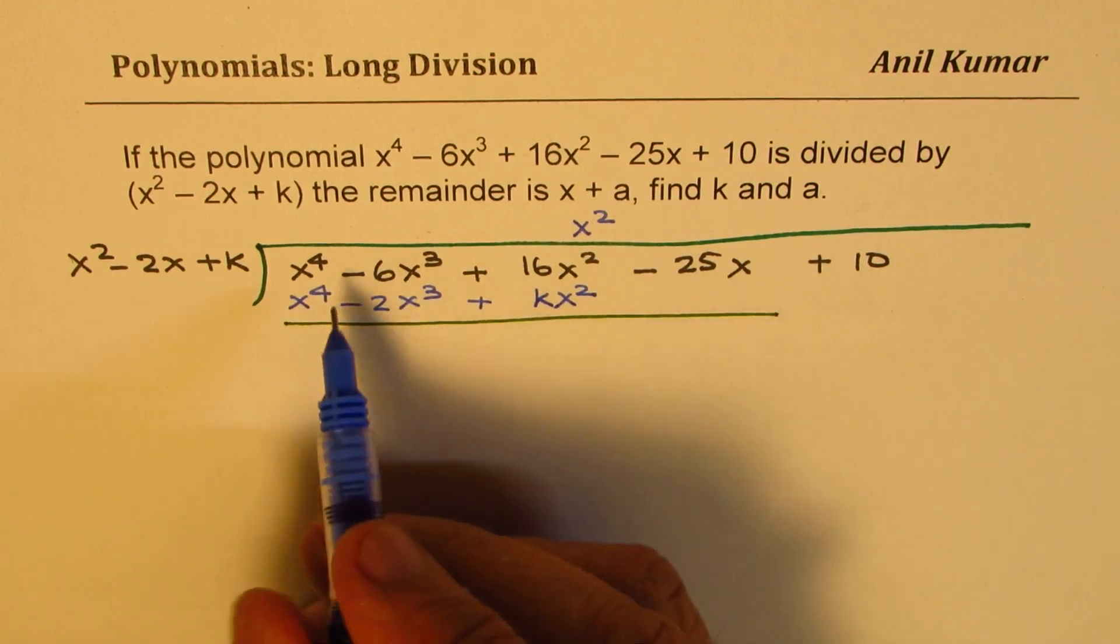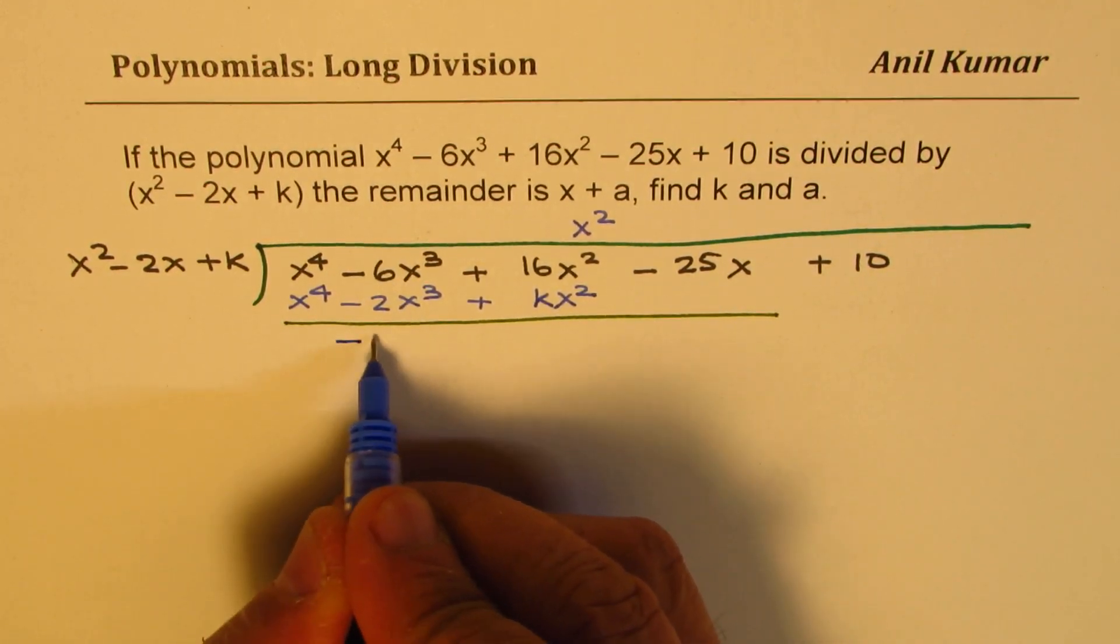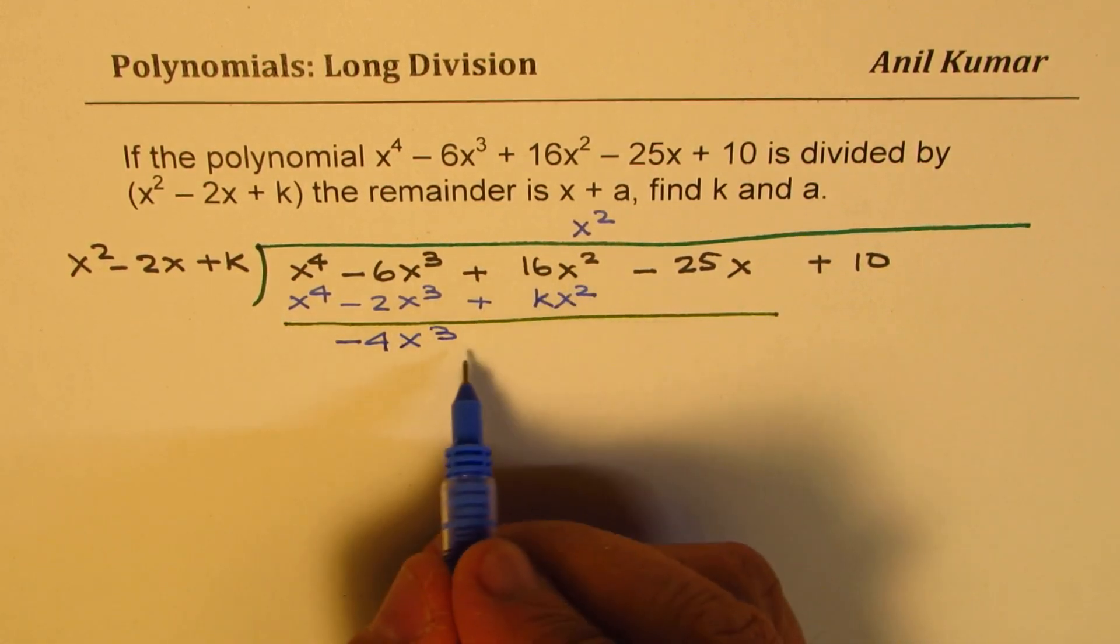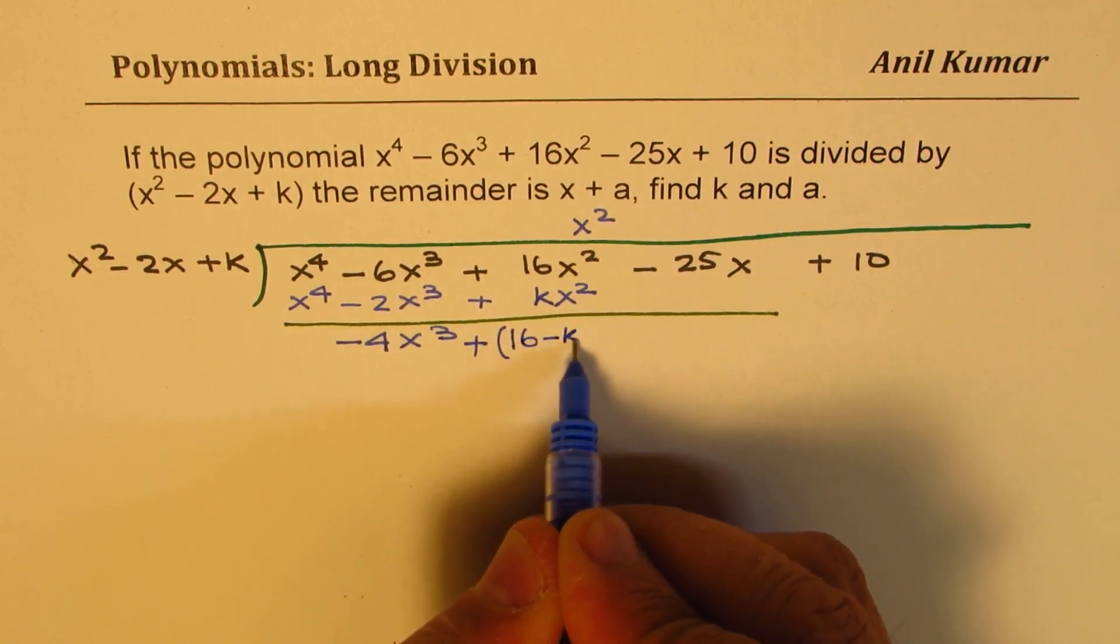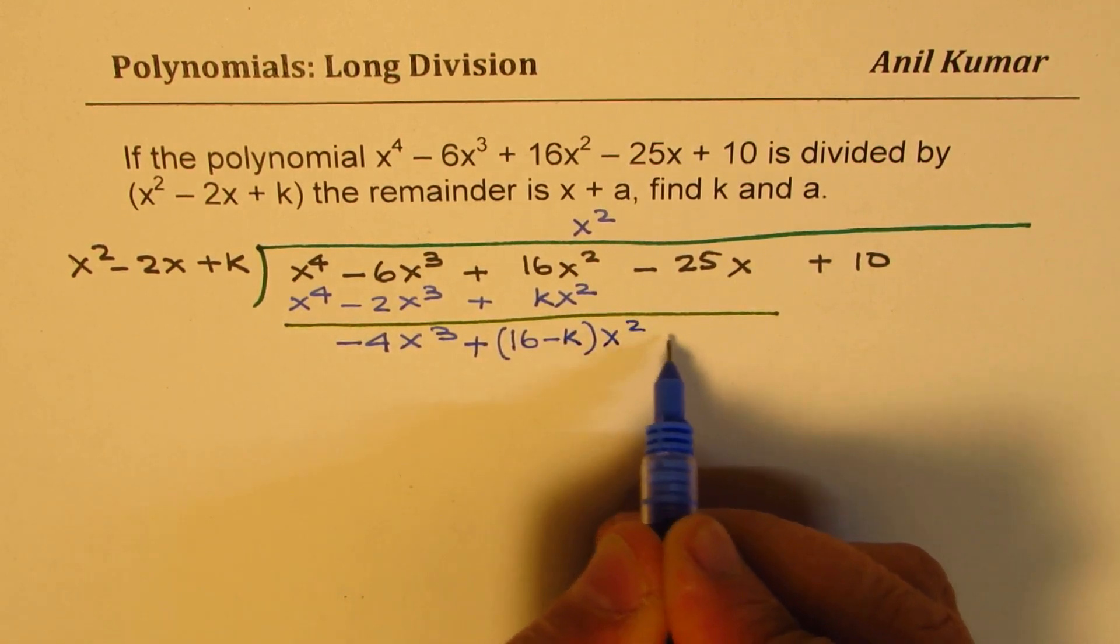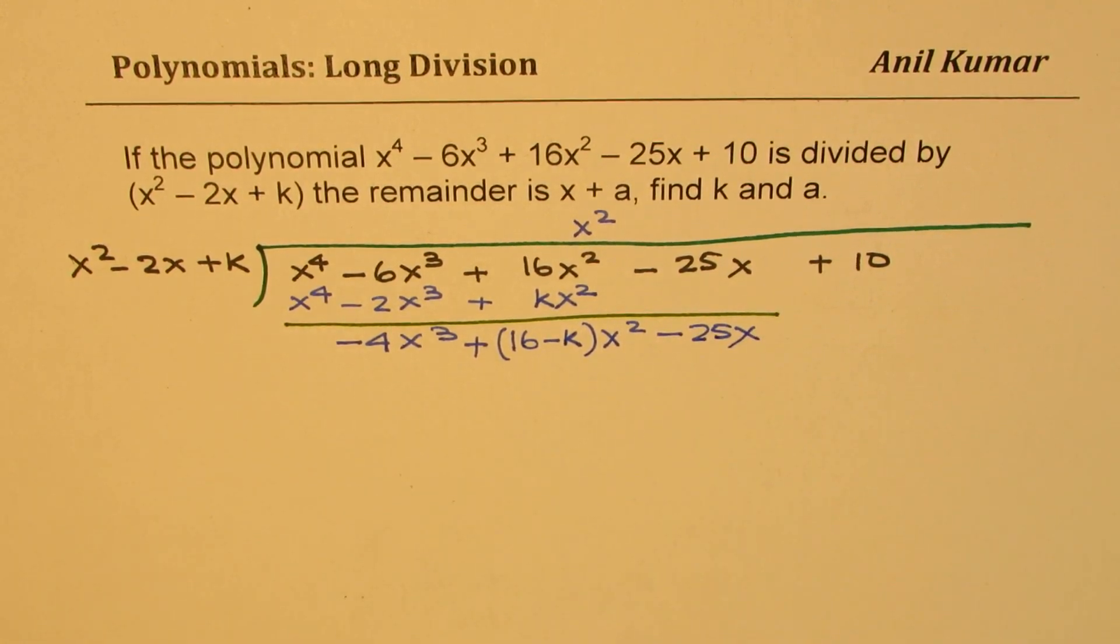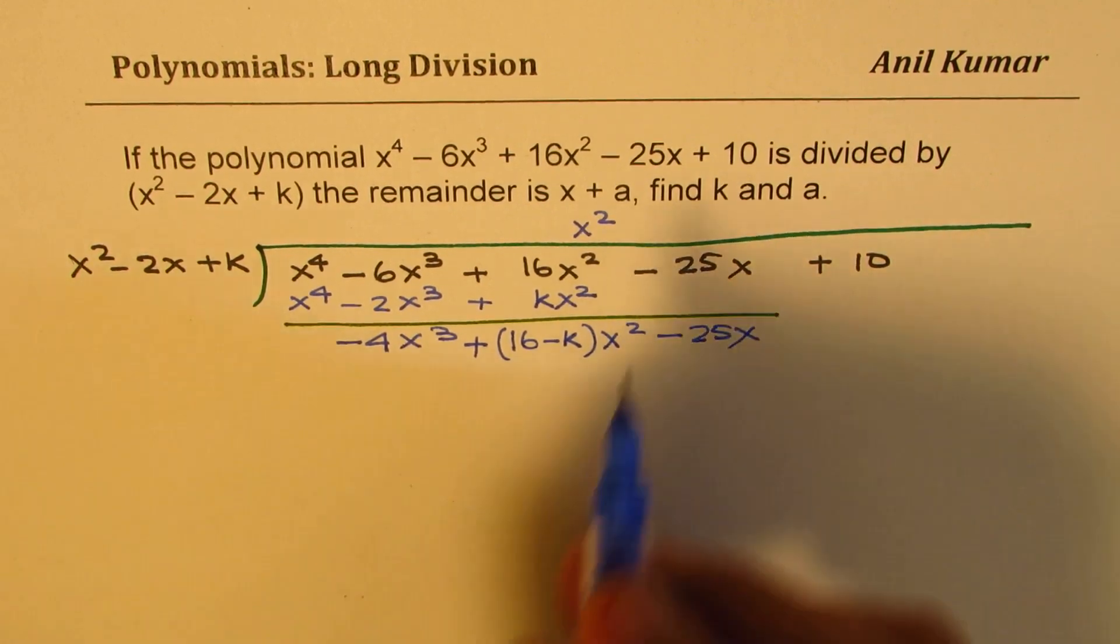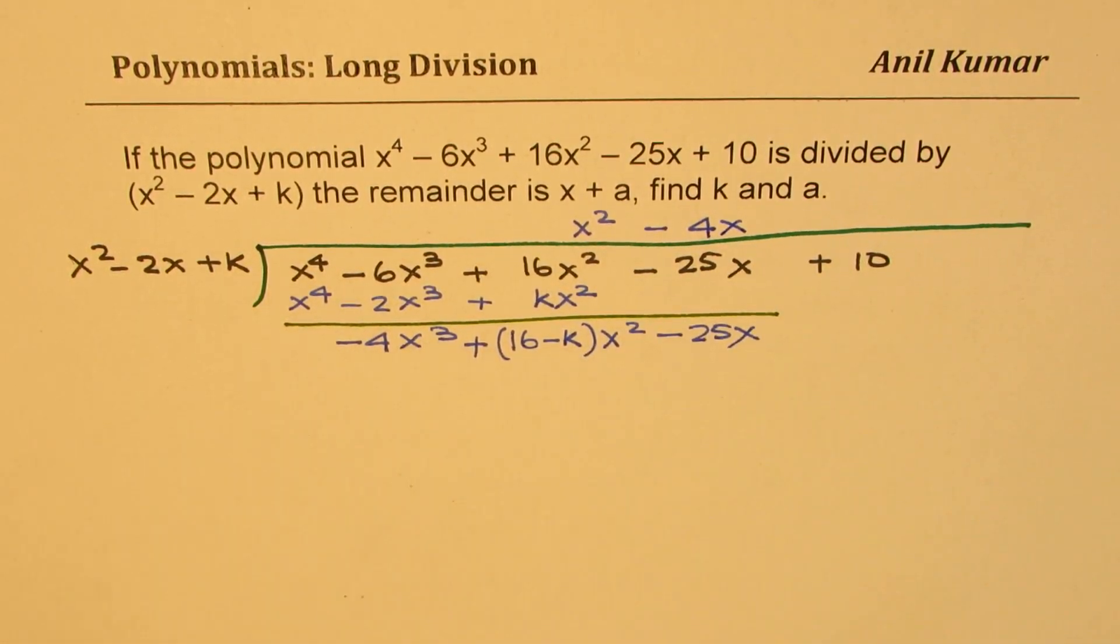When you take away, this gets cancelled. Here you get -4x^3. Here x^2 is common and we actually get (16 - k)x^2. Bring down -25x. Now in the quotient we need to multiply by -4x to get -4x^3.